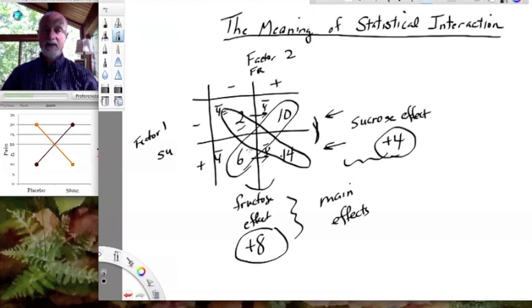So what that means is that those effects are completely additive. That means that you don't need to know what the sucrose level is to know what the fructose effect is, and vice versa. So you don't really need to know what the level of the other factor is in order to understand the effect of the factor you're interested in. And it's reversible. So it's the same the other way around as well.